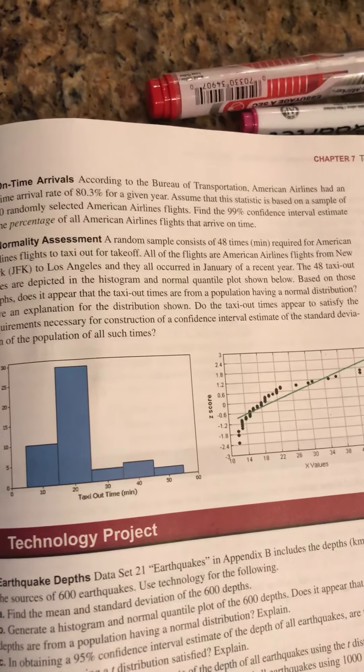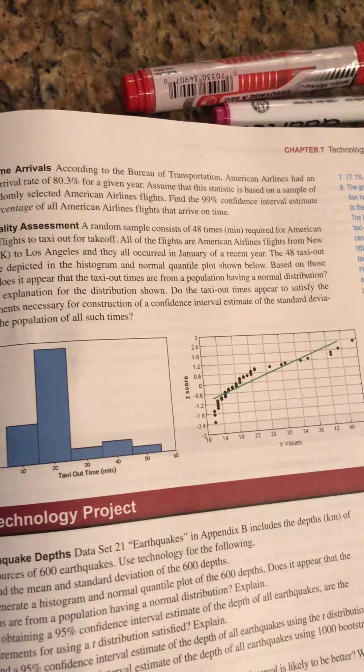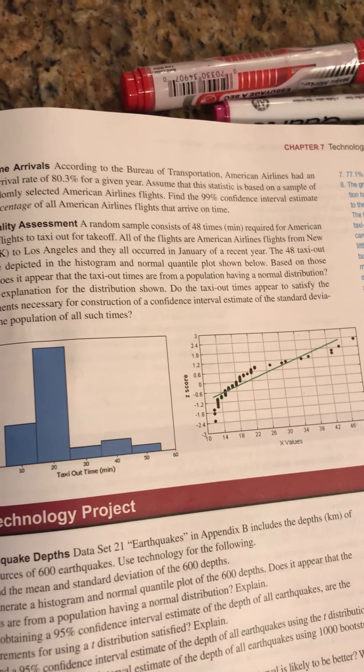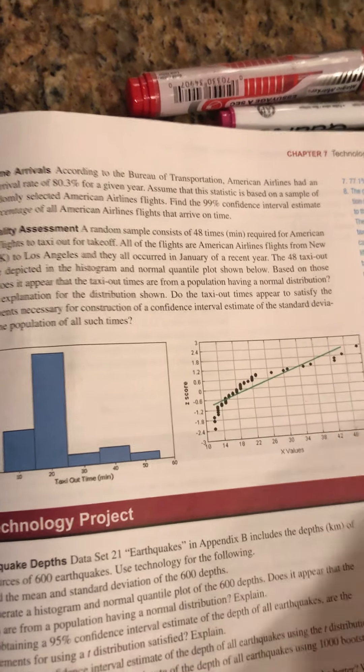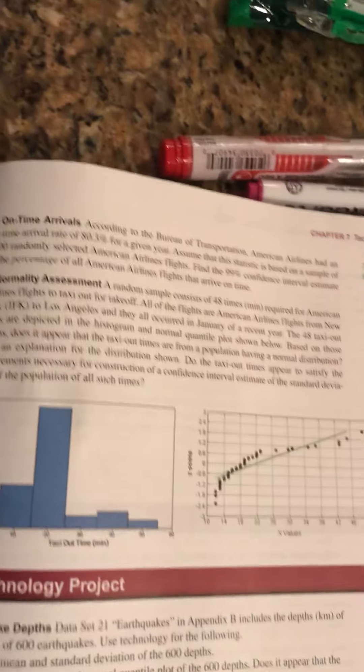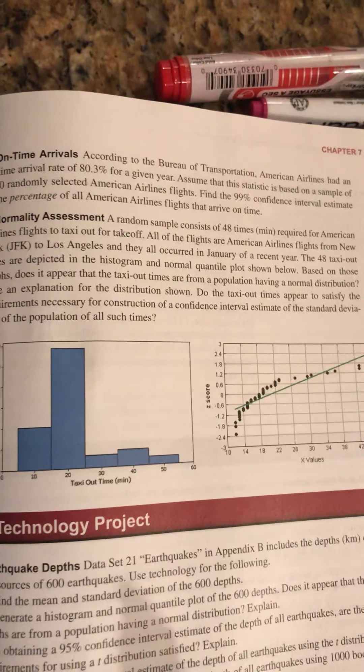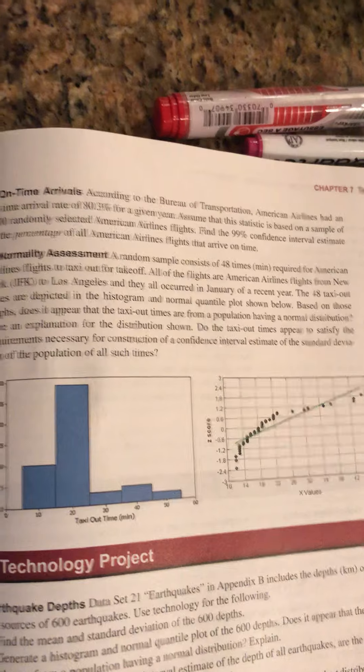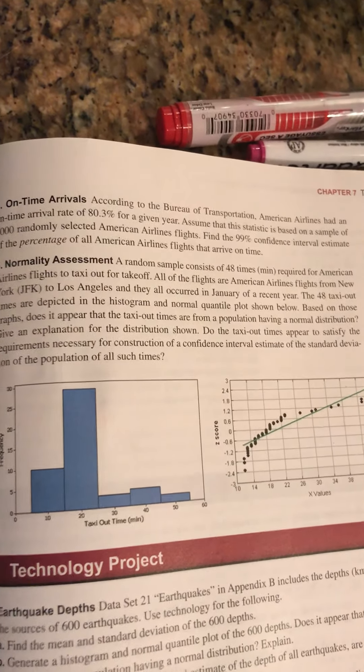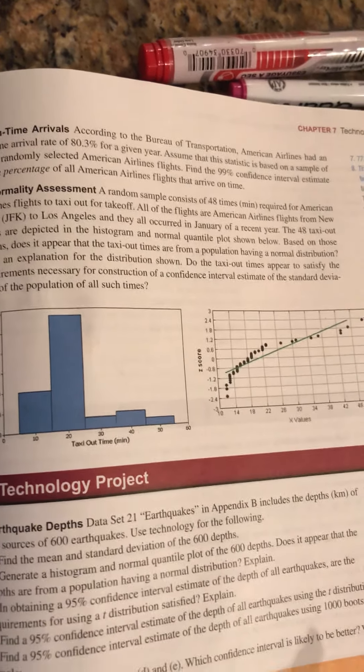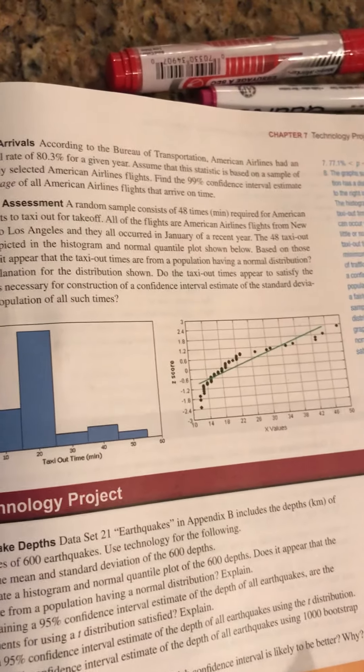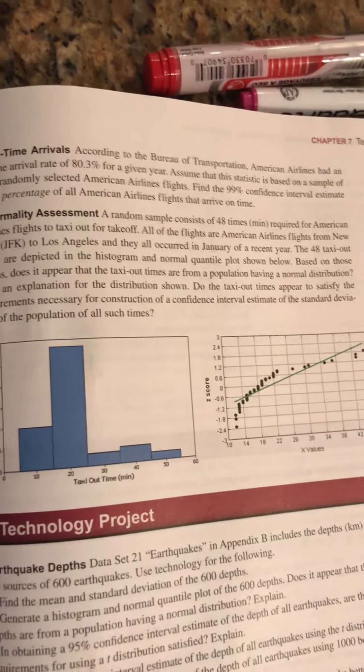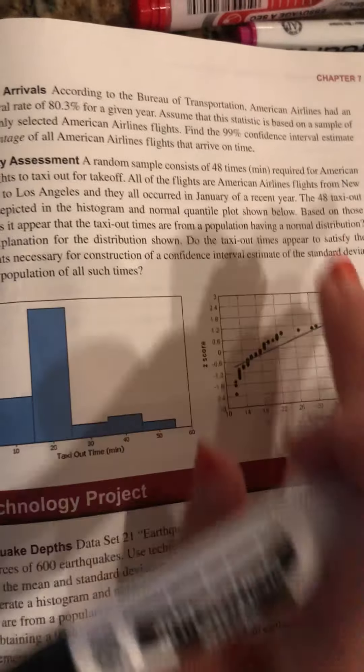So we could break those into two groups, success being you're early or on time and then a failure being late, and then counting the number of flights out of 1,000. So as soon as I start doing that, I start thinking I've got a discrete random variable and it's the number of on-time arrivals. And I also see that they asked me for a 99% confidence interval.